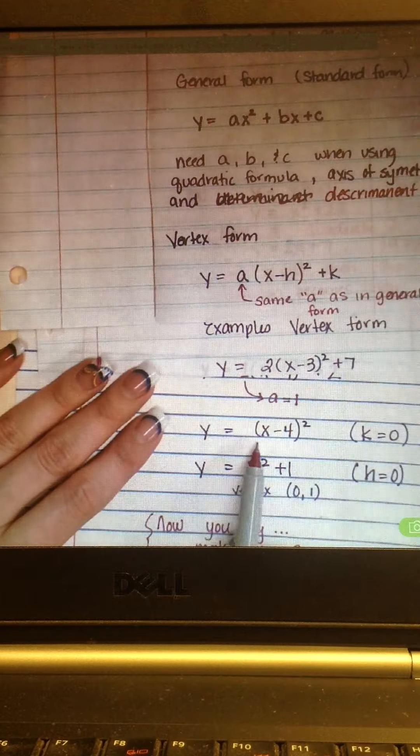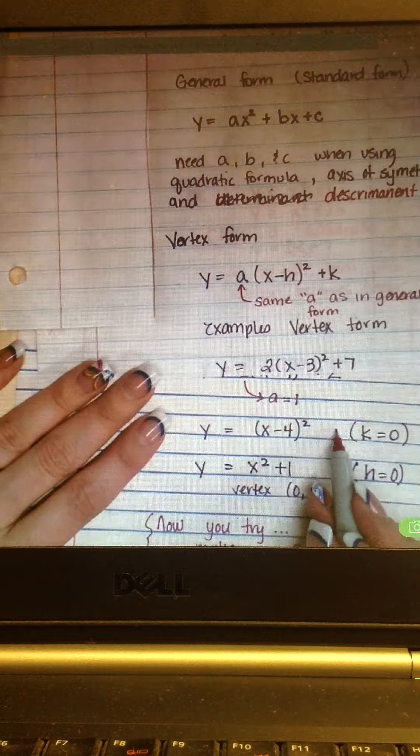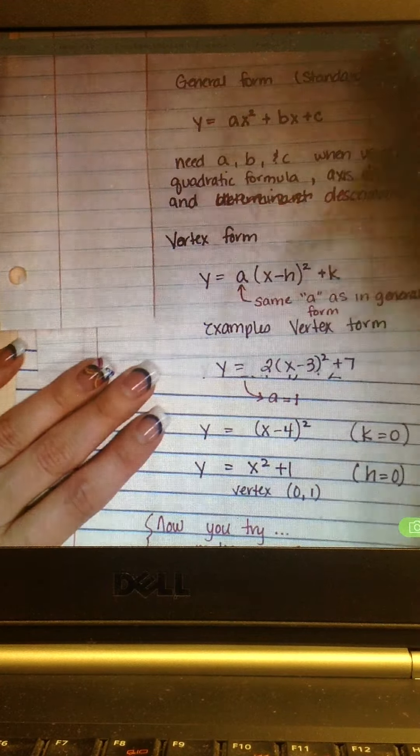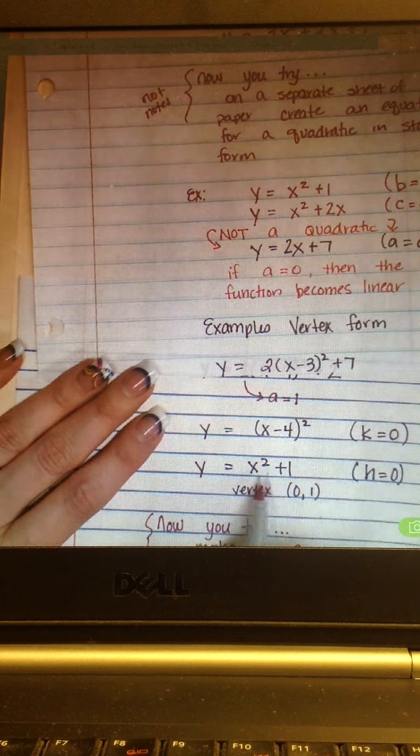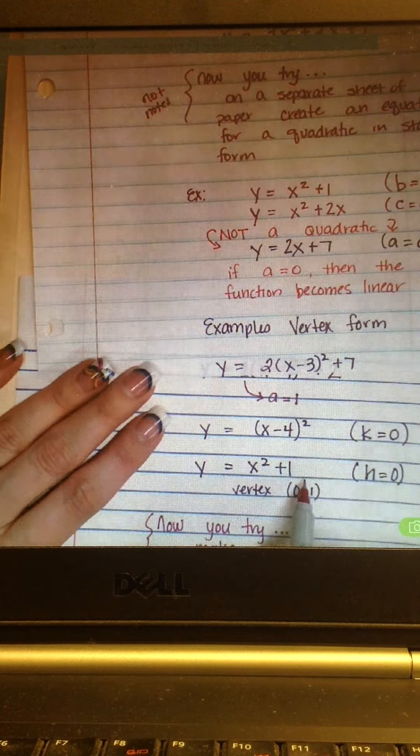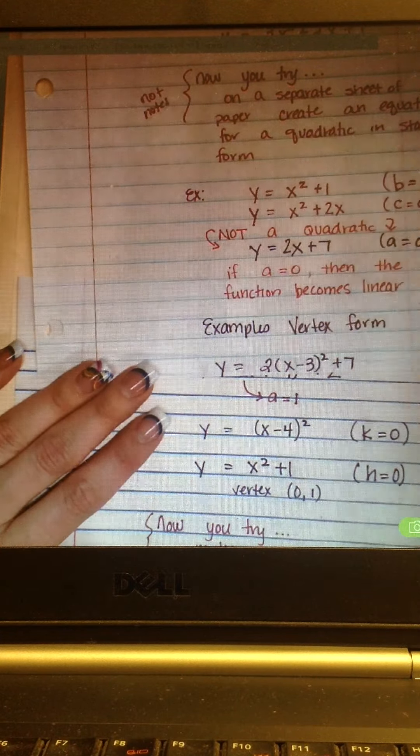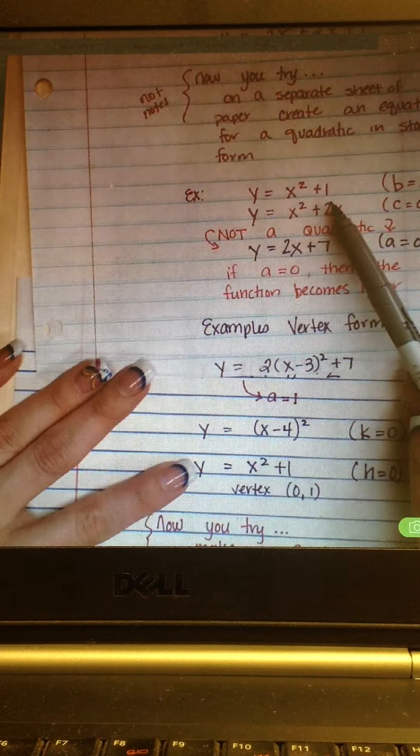Next, just a couple more examples. I've got x minus 4 squared with nothing written out here. But that's okay. That just means your K value equals 0. And then the last example that I have is y equals x squared plus 1. Well, I use this exact same example up here in standard form. It doesn't make it less not in vertex form just because it can also be written in standard form.